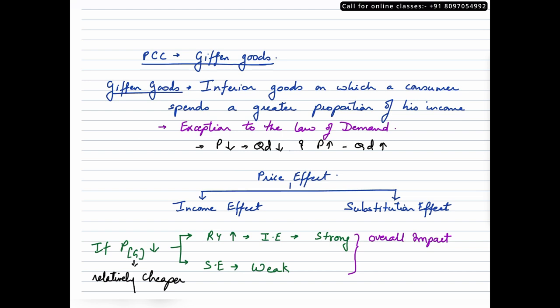That means the income effect is much stronger than the substitution effect. Now since the consumer has a higher real income with him now, he is feeling richer. He would not want to buy more of these inferior goods. In fact, he would use this spare income to buy more of superior goods. Hence, the overall impact on the quantity would fall. That means the quantity demanded would go down as there is a fall in the price of Giffen goods.